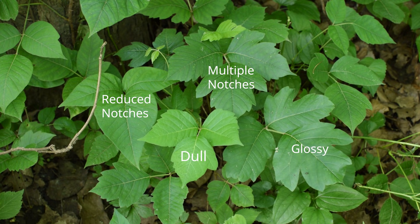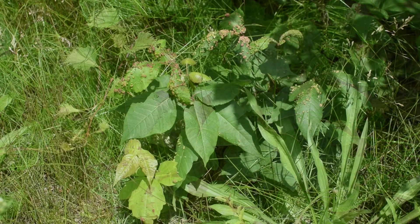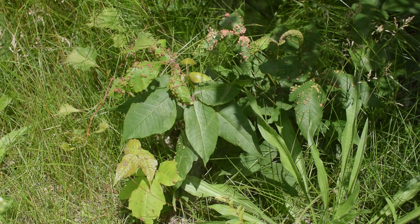Each of the labeled leaves in this scene are poison ivy — some are mostly smooth and others have deep notches. Poison ivy leaves are occasionally covered in wart-like structures. These are galls, and they are caused by mites.